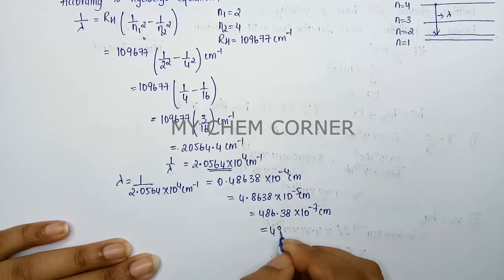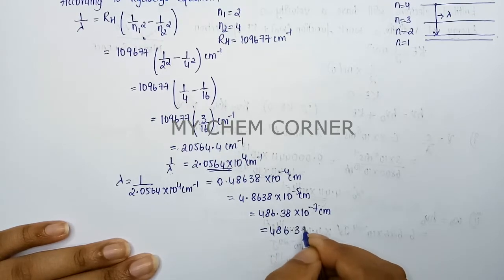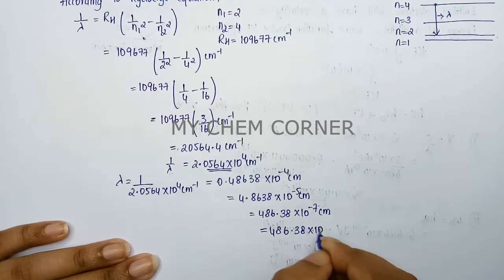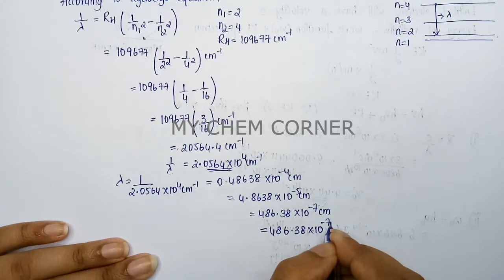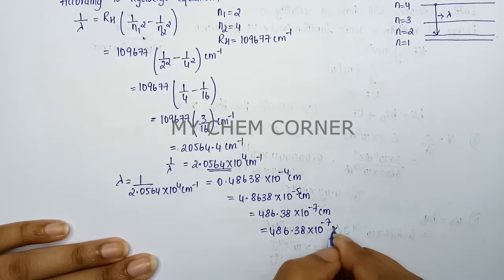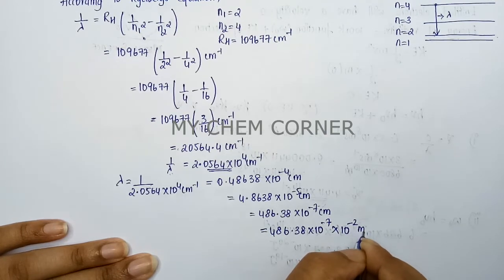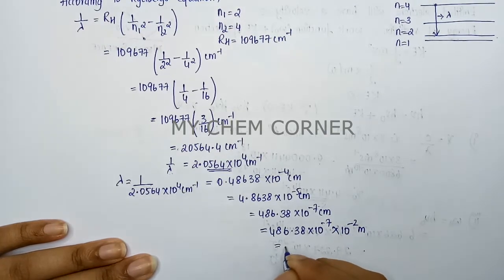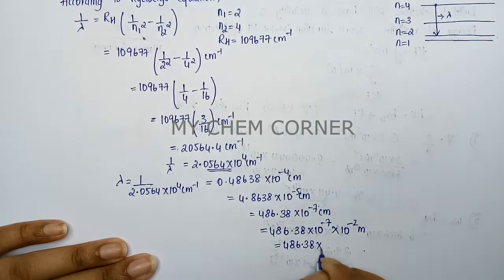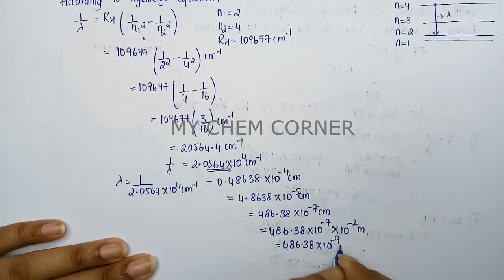When we convert cm to m, this will be minus 2 again. This will be 486.38×10⁻⁷. Convert to m, this will become 10⁻² m. Simplify the powers, you will get 486.38×10⁻⁹ m.